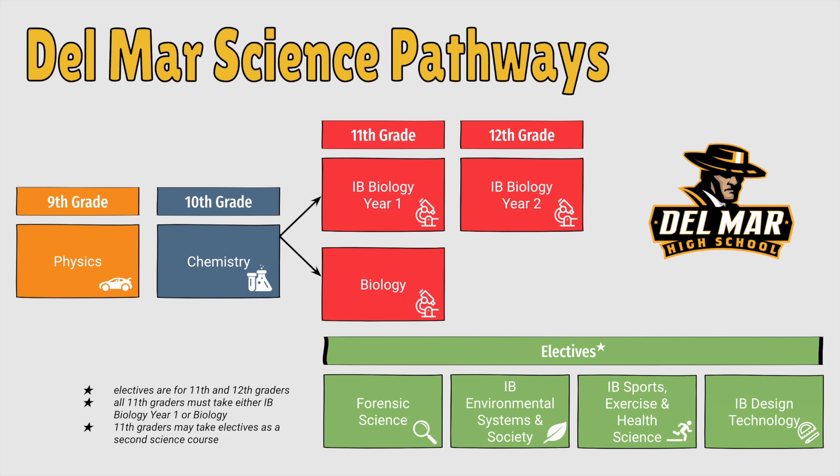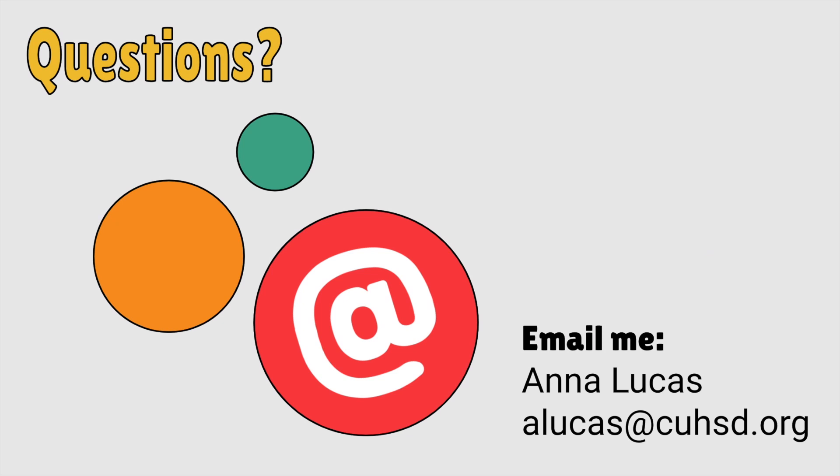In 11th grade, students have a choice of whether to take our two-year IB Biology course or Biology. IB Biology is a college-level course and students can earn college credit upon successful completion of the IB Biology exam at the end of their senior year. We also offer four electives: Forensic Science, IB Environmental Systems and Society, IB Sports Exercise and Health Science, and IB Design Technology. Electives are available only to juniors and seniors. If you have any questions, please feel free to reach out.